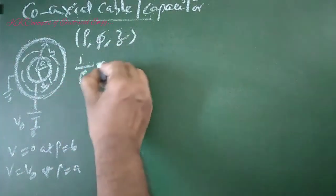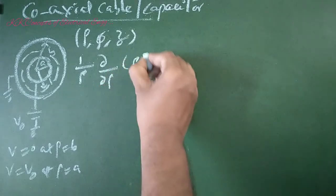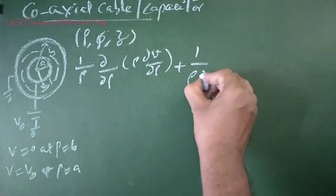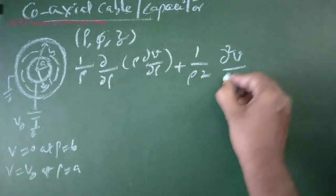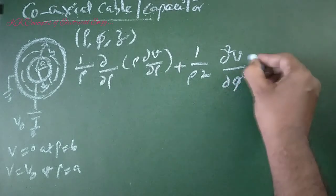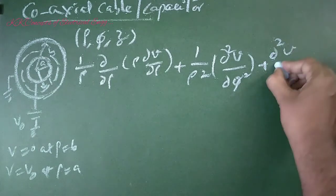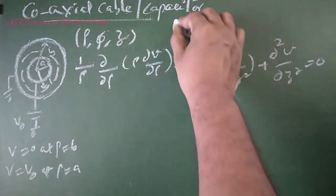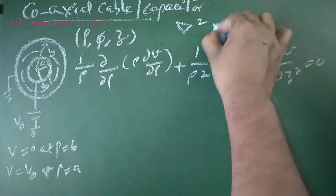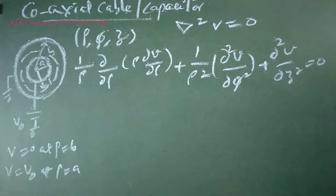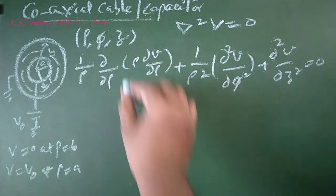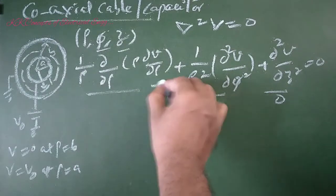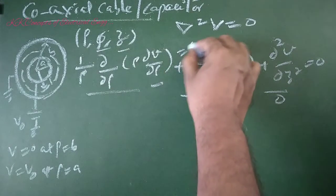Then (1/ρ)(∂/∂ρ)(ρ ∂V/∂ρ) + (1/ρ²)(∂²V/∂φ²) + (∂²V/∂z²) equals 0 in cylindrical form. We know the Laplace equation is ∇²V equals 0. V is not a function of φ and z, so these two terms become 0. This term remains and must equal 0.